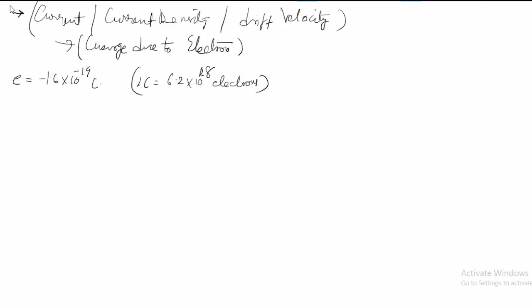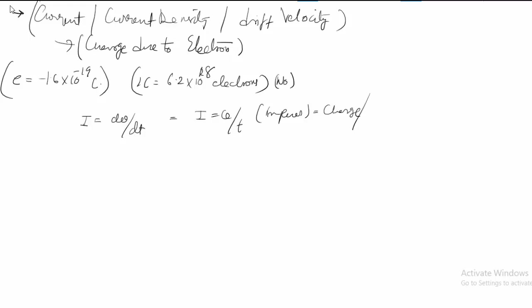This is the number of electrons needed and this is the charge per electron. The universal definition of current is: current i is equal to dq by dt, or in general i is equal to q divided by t. The unit is amperes, which is charge per second.